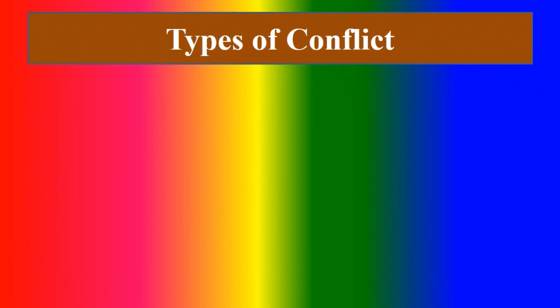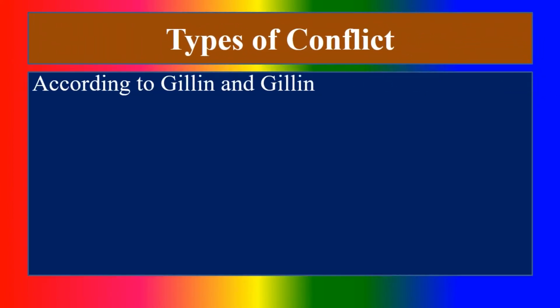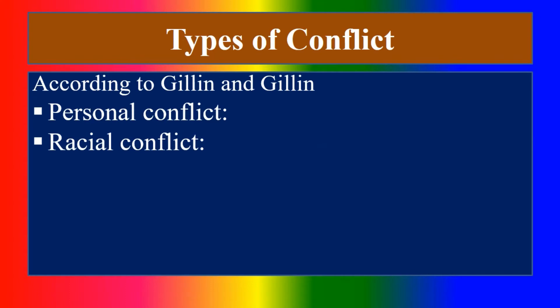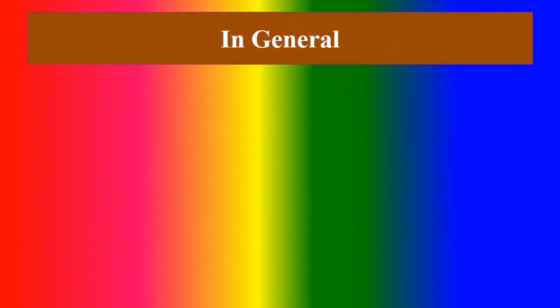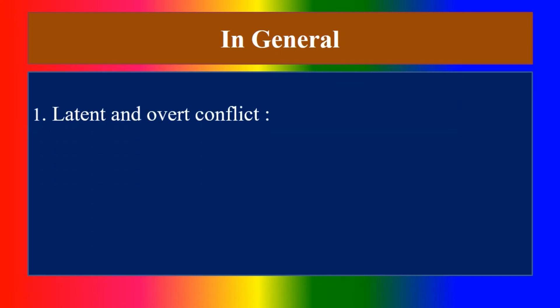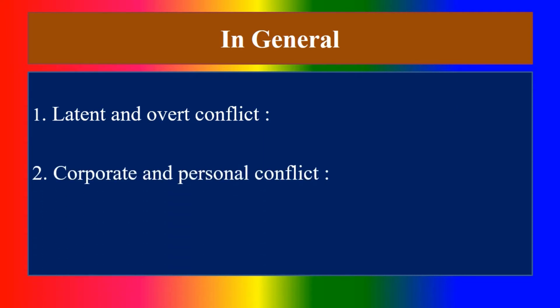Can you list types of conflict? According to Gillian and Gillian: personal conflict, racial conflict, class conflict, political conflict, and international conflict. In general: latent and overt conflict, and corporate and personal conflict.